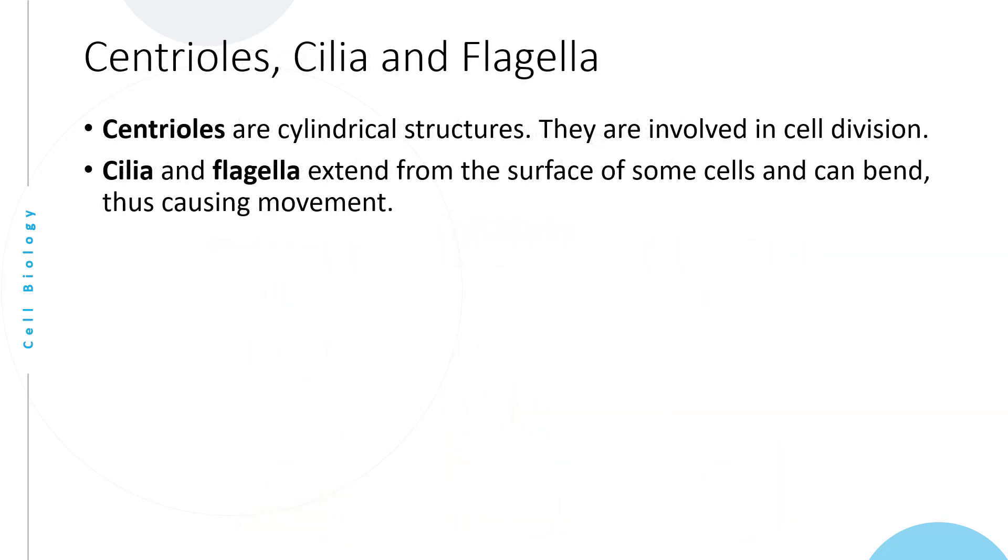Centrioles, cilia, and flagella. Centrioles are cylindrical structures involved in cell division, as we saw earlier. The centrioles are assembled on two poles of the cell and pull the chromosomes to the two poles of the cells before the cell divides into two. Cilia and flagella extend from the surface of some cells and can bend, thus causing movement.